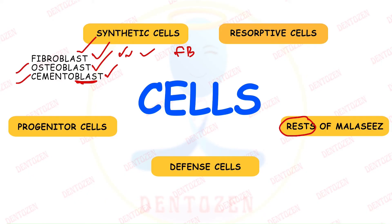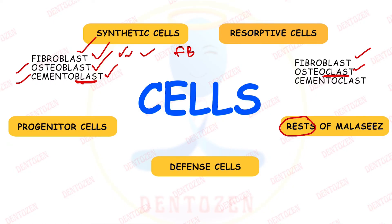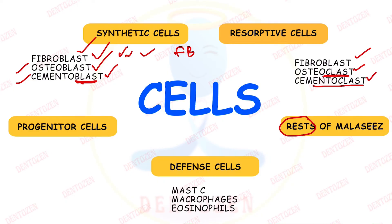The resorptive cells of collagen fibers are fibroblasts. The resorptive cells of bone are osteoclasts — 'clast' meaning which destroys — and the resorptive cells of cementum are cementoclasts. Defense cells in the PDL can be mast cells, macrophages, and eosinophils. Those are the five cell types.